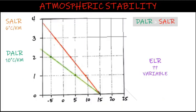Atmospheric stability determines whether air will rise and cause storms, sink and cause clear skies, or essentially do nothing. Stability is dependent upon the dry and saturated adiabatic lapse rates and the environmental lapse rate. We compare the measured environment lapse rate with both the DALR and SALR to determine the atmospheric stability condition. The DALR and SALR are fixed rates, while the environment lapse rate is extremely variable and may plot in many different positions, resulting in different stability conditions.